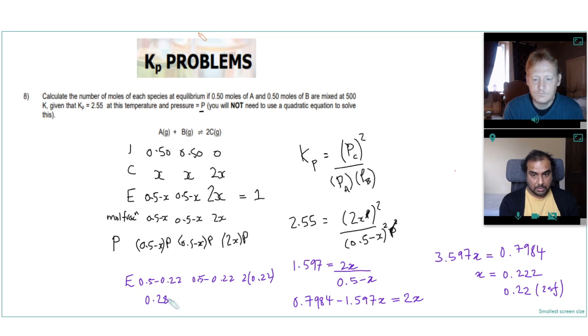And C is just 2 times 0.22. So 0.28, 0.28, and 0.44. That's A, B, and C just to be clear again. Excellent, and that's the number of moles of A, B, and C at equilibrium.